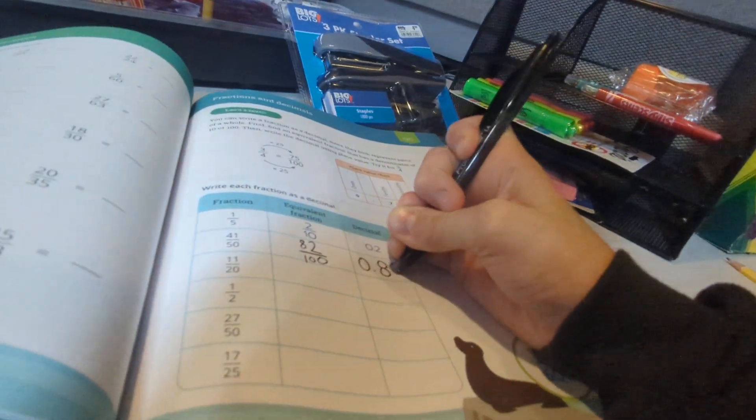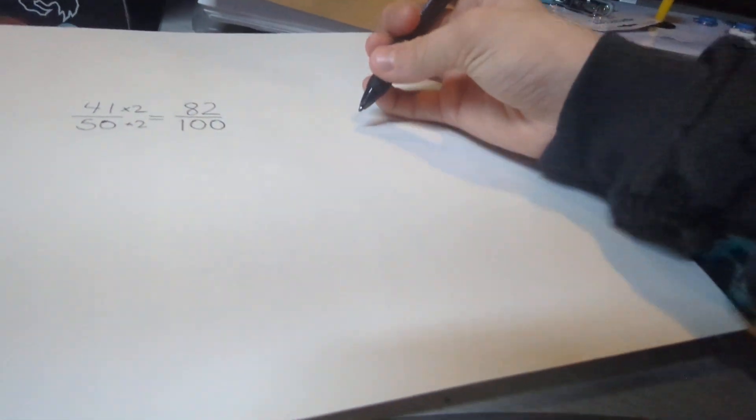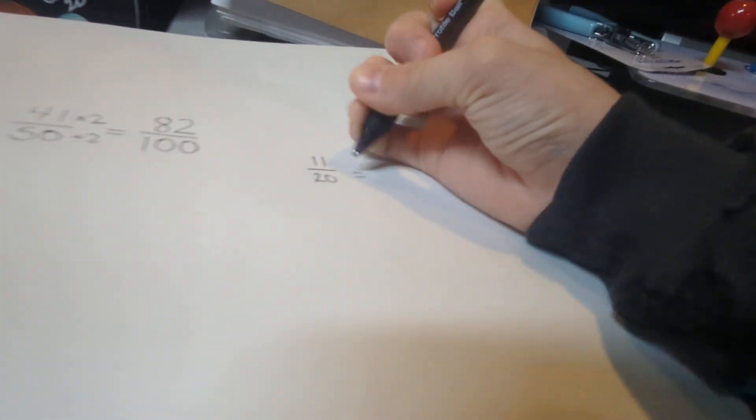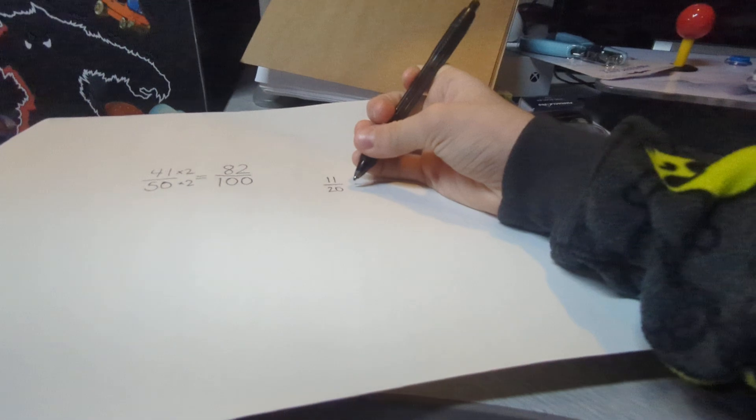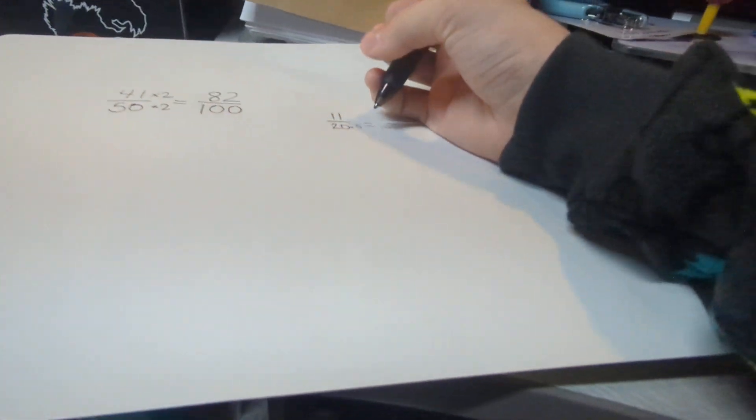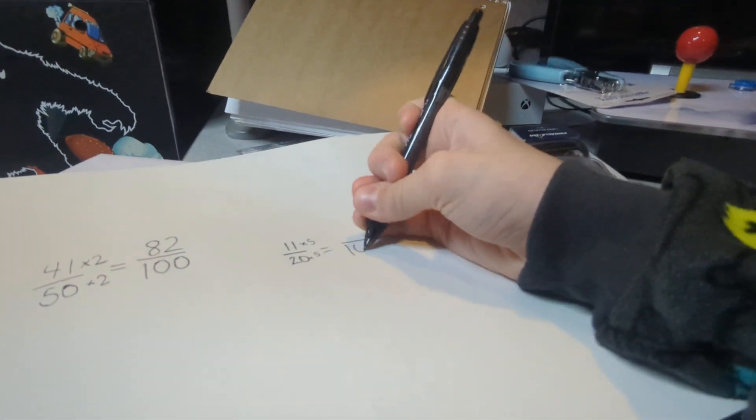Now let's try it for 11/20. So here we write 11/20. Now you multiply it by 5. 20 times 5 is 100.